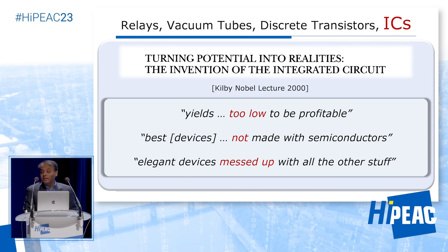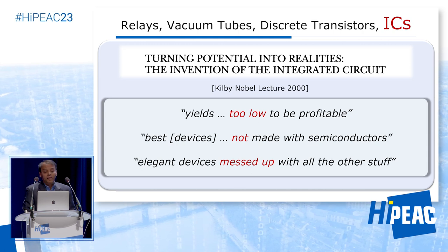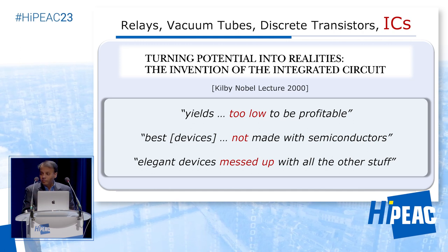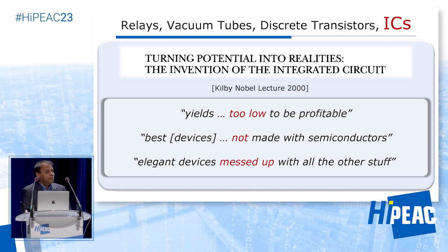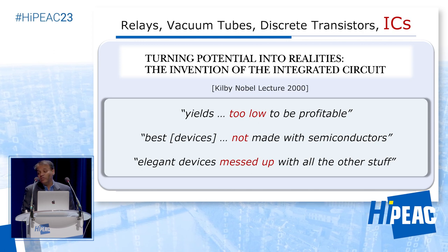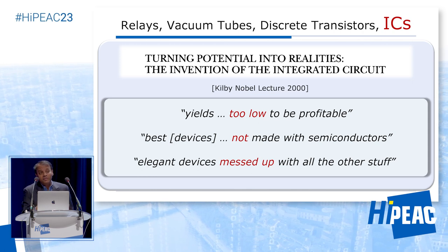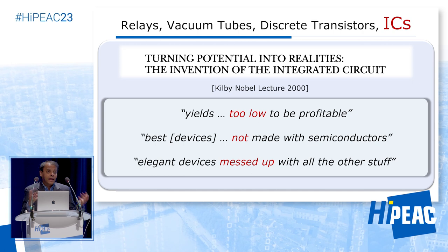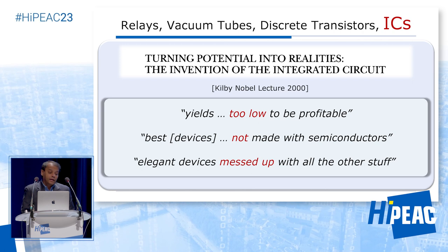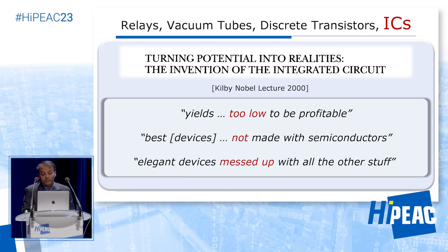He points at three points that the naysayers of integrated circuits were very skeptical about. First, they said the yields would always be too low to be profitable. Number two, the best devices were not made with semiconductors — meaning the materials we use in integrated circuits today. And the third one is really beautiful: the true transistor people didn't like to see their elegant devices messed up with all the other stuff on the chip. Kilby makes the point in his Nobel lecture that he didn't have a rebuttal because all the points were essentially true. But the big news is that integrated circuits have changed all our lives over the past 60 years.